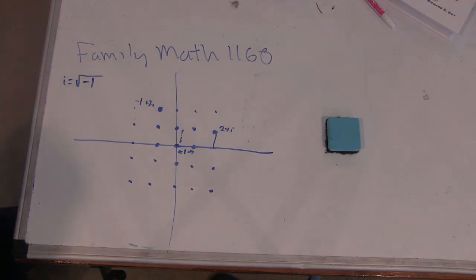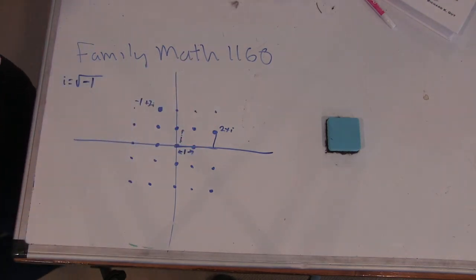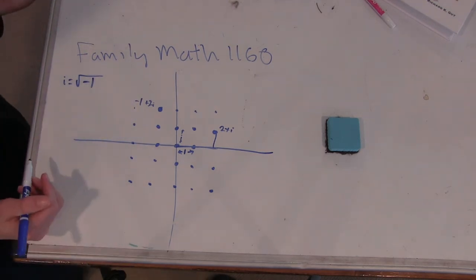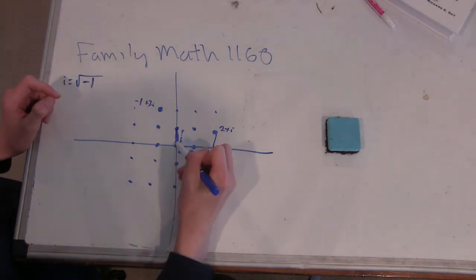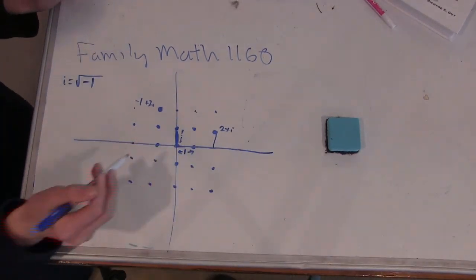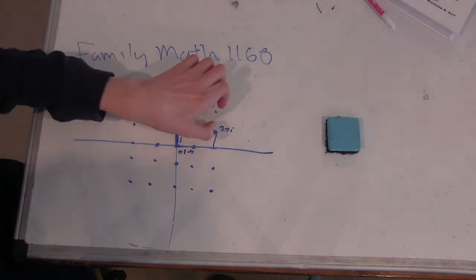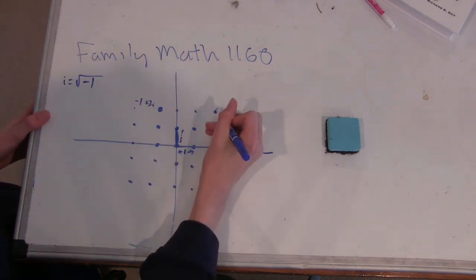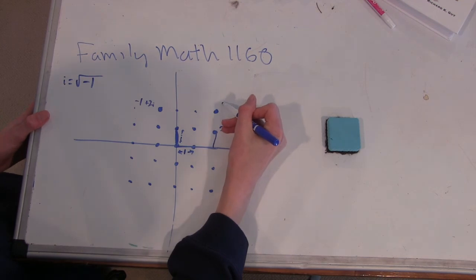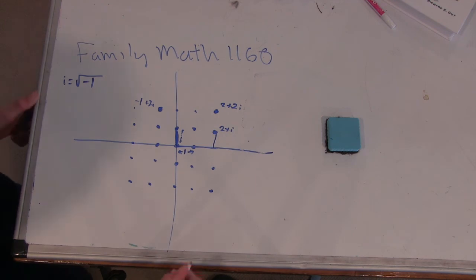Okay. So say if you had i and 2 plus i. What you would do is take the length of i, and you see how you get to the origin from that. And you just take it and you put it on 2 plus i. And that's how you add. Okay. So you get 2 plus 2i.